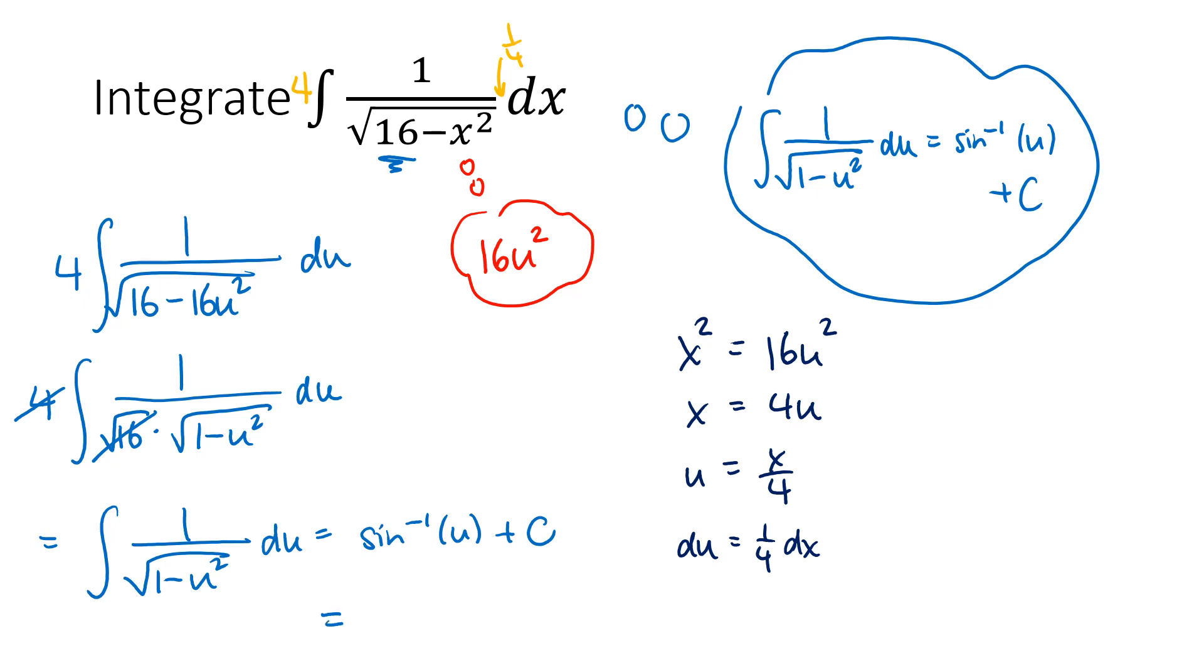And then the only step left is to go back to what the original u was equal to, which is x over 4. So that's our result. So when you see examples like this where it almost looks like an inverse trig function, this kind of substitution can help you out.